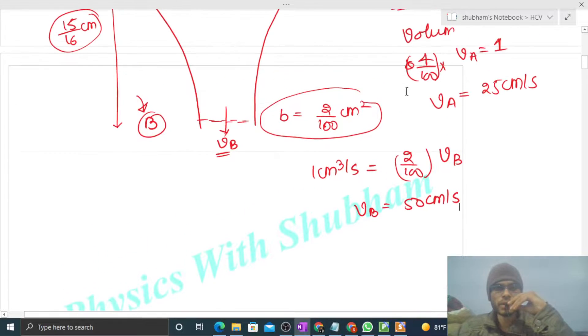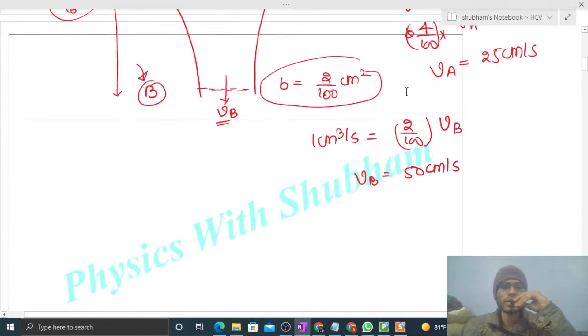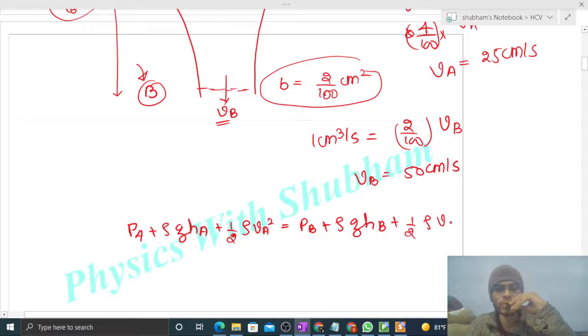Now we have to find out pressure difference using Bernoulli's equation. So pA plus rho g hA plus half rho vA squared, that should be equal to pB plus rho g hB plus half rho vB squared.